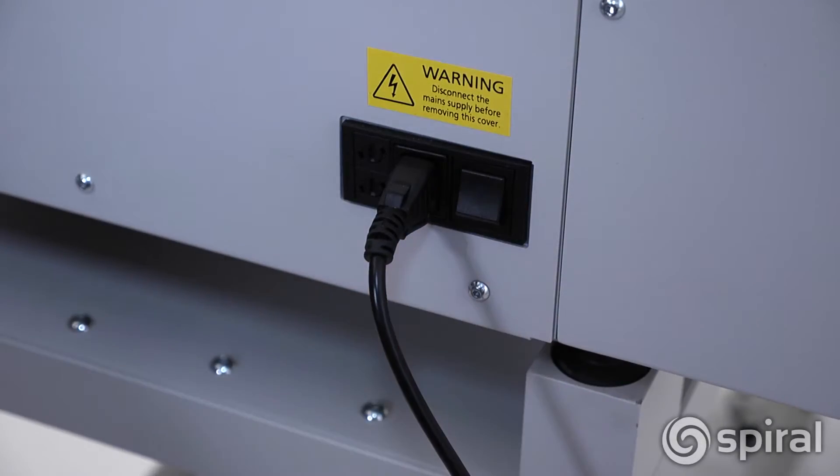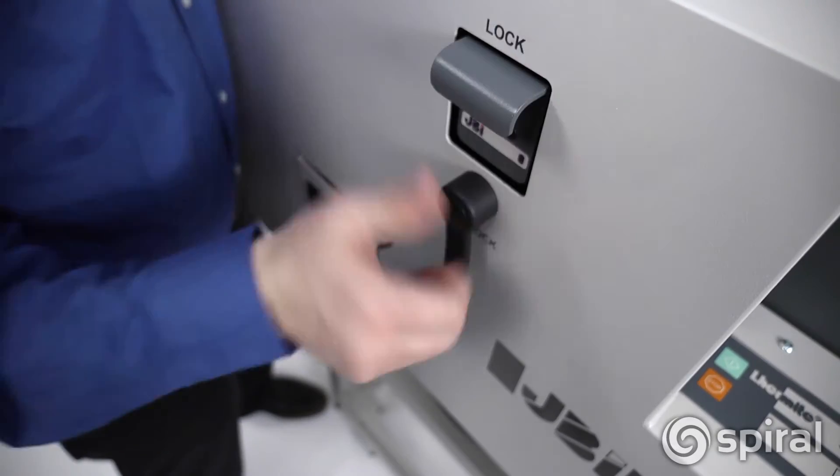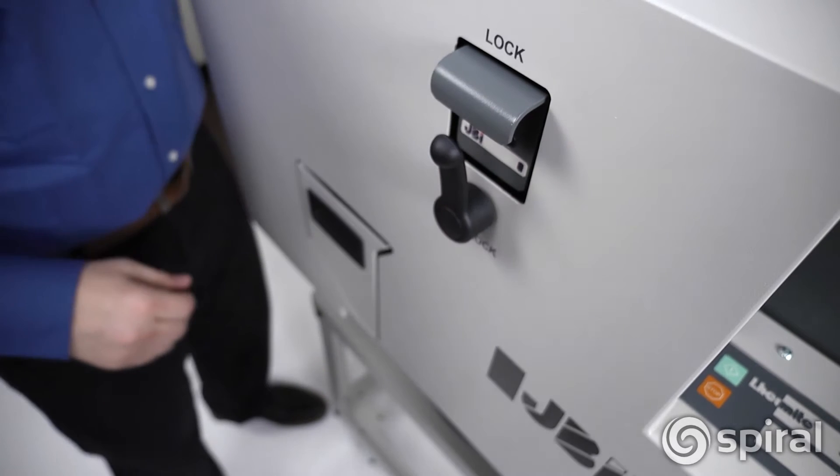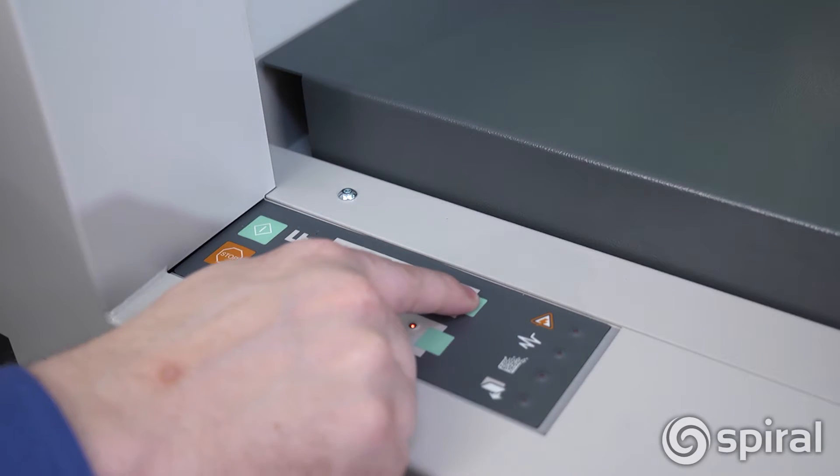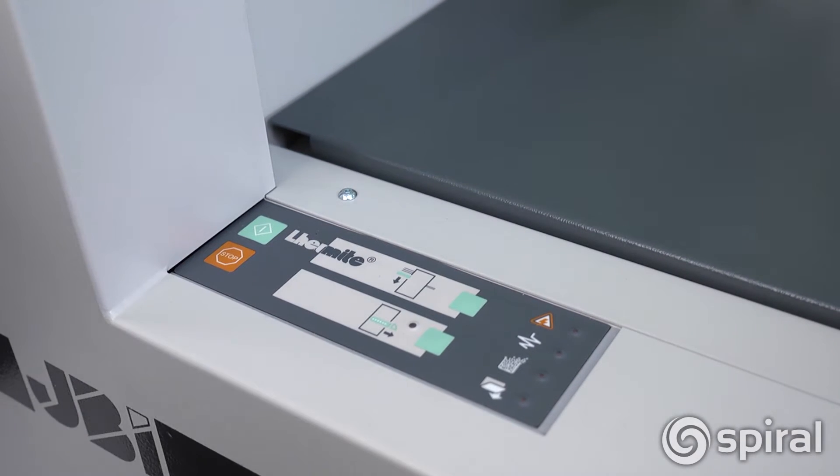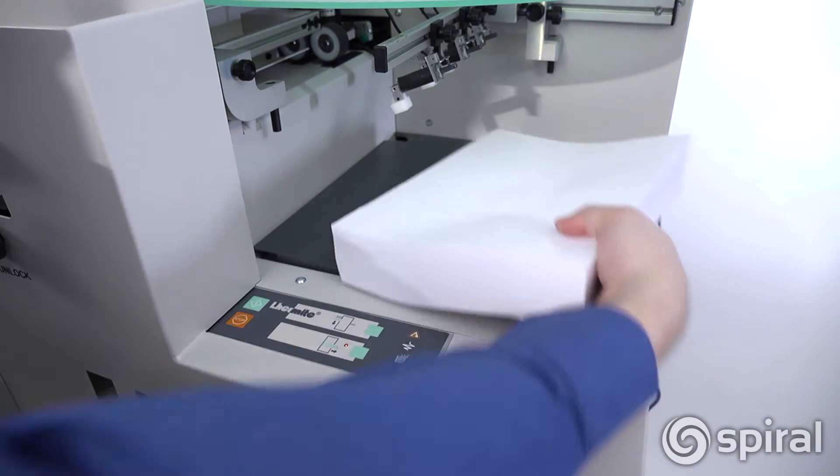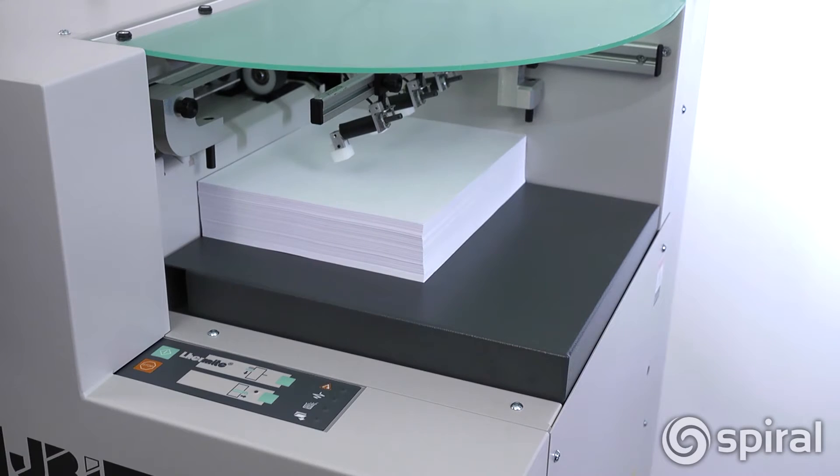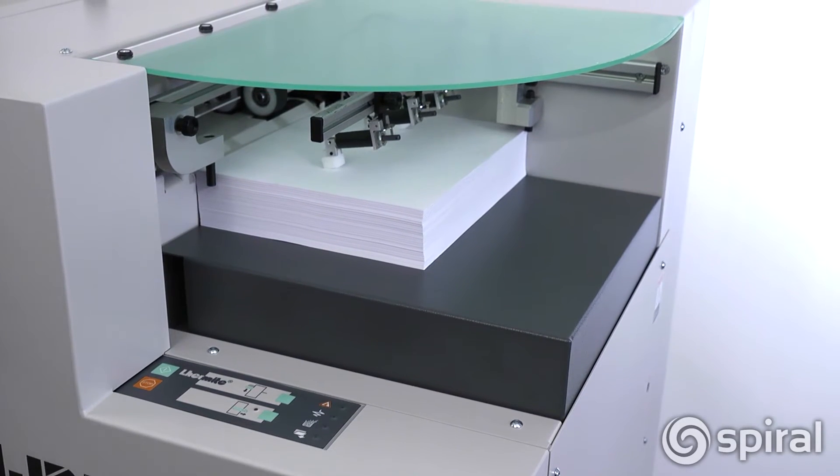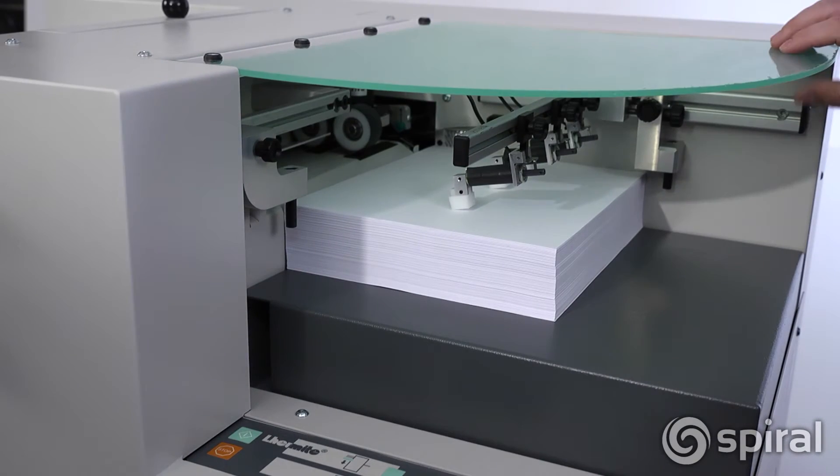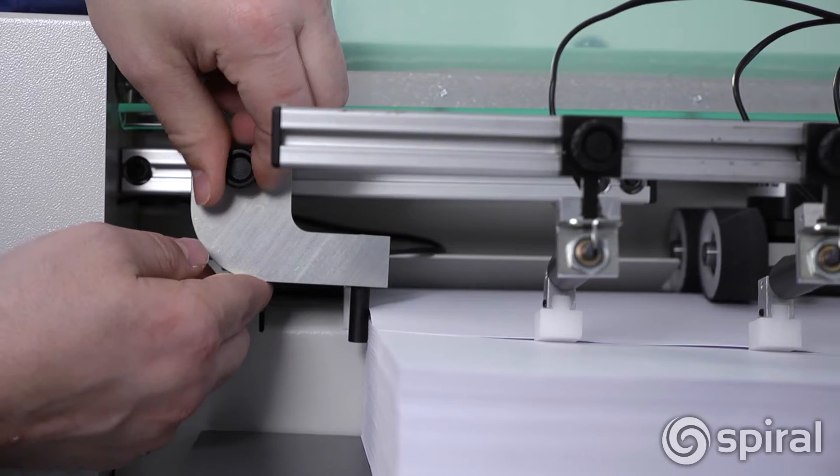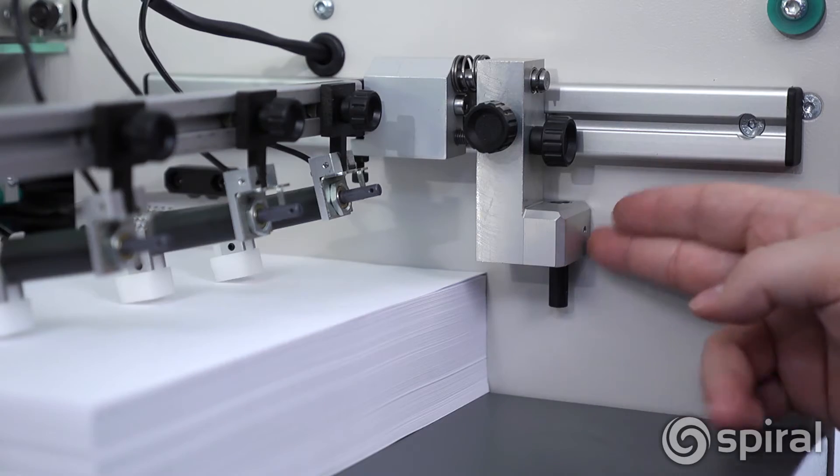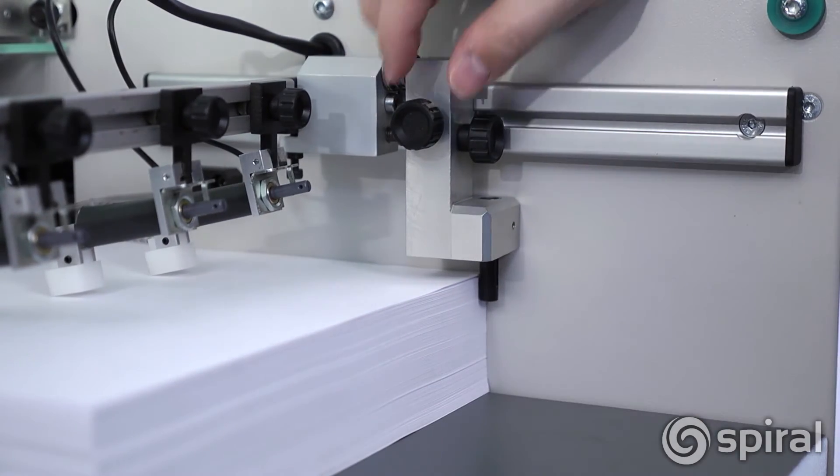Power on the machine. The machine can't be operated without a punching die installed. Lower the feed tray using the feed tray icon button on the touchpad and load paper onto the feed table. Press the green run icon button to lift the tray.